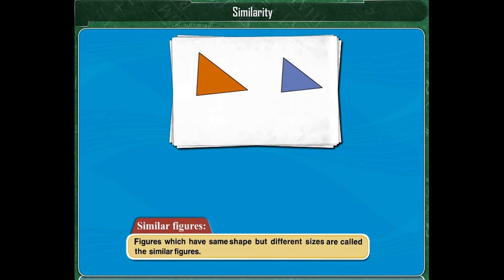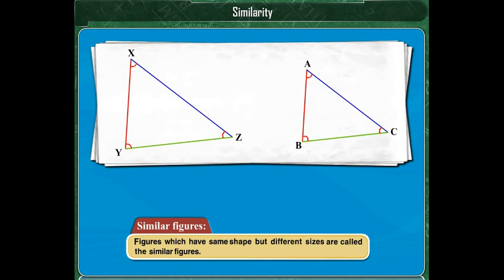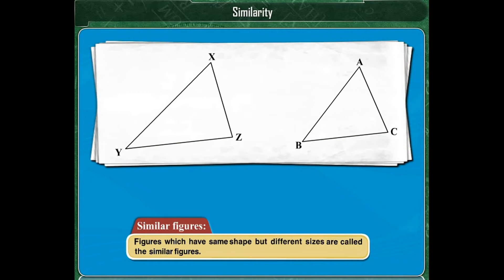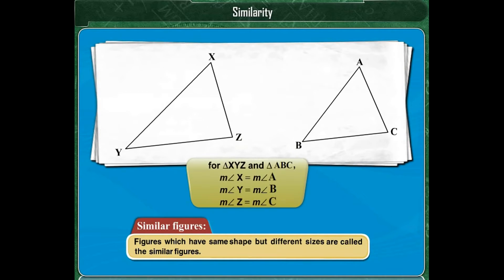You have studied the elements of a triangle. Which of these elements will change the shape of the triangle? The angles will change the shape of the triangle. When we say two triangles have the same shape, that means the corresponding angles of these two triangles are of equal measure.